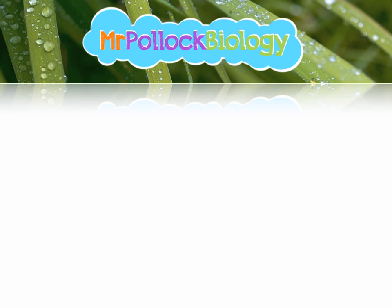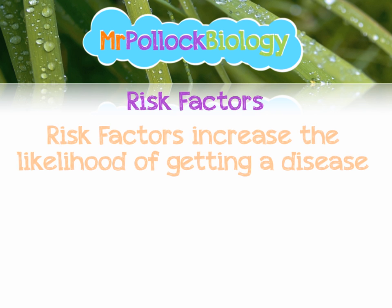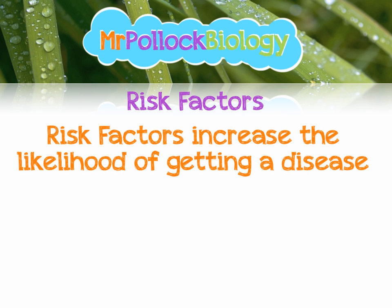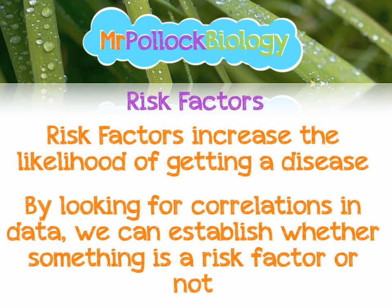Now let's talk about risk factors. A risk factor is something that increases the likelihood of you getting a certain disease. The obvious one is smoking and emphysema - the more you smoke, the more likely you are to get emphysema. When we have lots of data for different things that might cause disease, we can look for associations, mainly correlations, where a change in one thing affects the other. People who smoke less are less likely to get emphysema, and people who smoke more are more likely to get emphysema - that's a positive correlation. The more you do something, the more likely you are to get the disease.